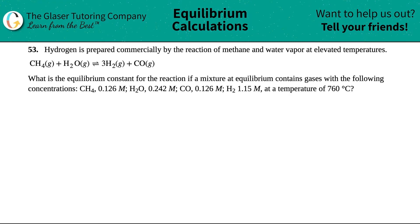Number 53. Hydrogen is prepared commercially by the reaction of methane and water vapor at elevated temperatures. And then we have this equation right here. What is the equilibrium constant for the reaction if a mixture at equilibrium contains gases with the following concentrations? CH4 0.126 M, H2O 0.242 M, CO 0.126 M, H2 1.15 M at a temperature of 760 degrees Celsius.